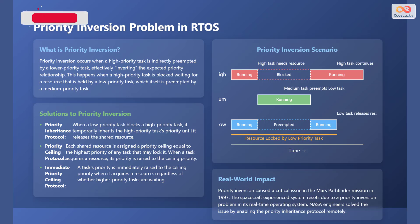Let's address a common challenge in RTOS: the priority inversion problem. Priority inversion occurs when a high priority task is indirectly preempted by a lower priority task, effectively inverting the expected priority relationship. This typically happens when a high priority task is blocked waiting for a resource held by a low priority task, which itself is preempted by a medium priority task. The first solution is the priority inheritance protocol: when a low priority task blocks a high priority task, it temporarily inherits the high priority task's priority until it releases the shared resource.